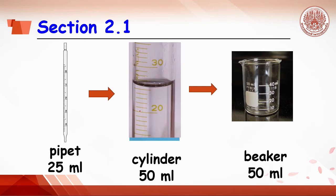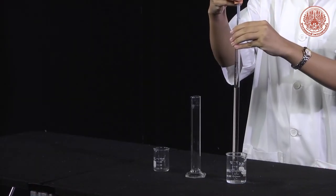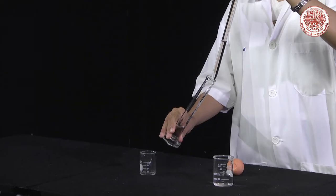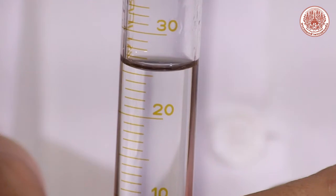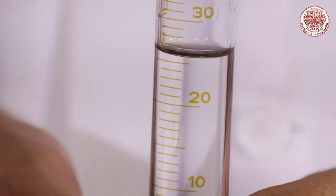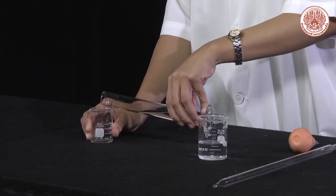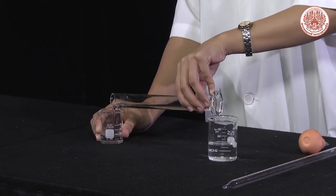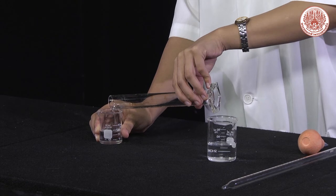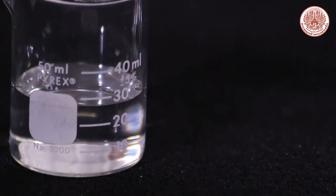Section 2.1: This experiment is carried out by pipetting 25 mL of tap water and transferring it to a 50 mL graduated cylinder. Read the volume of tap water in the cylinder based on significant figure rules. Then transfer the tap water from the cylinder to a 50 mL beaker and read the volume from the beaker.